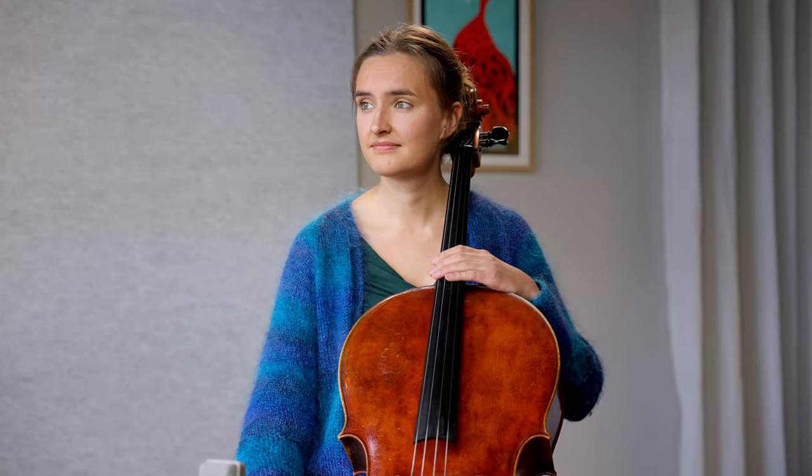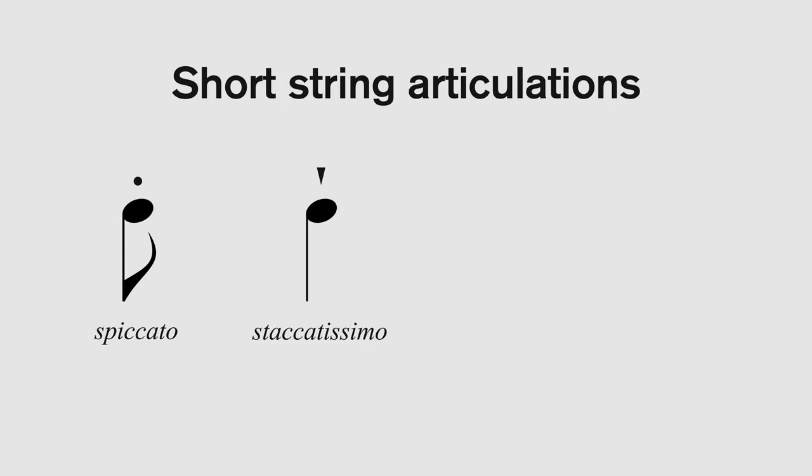It's funny because, as composers who use samples, we stick articulations into small boxes — spiccato, staccatissimo, and so on. When we put articulations into boxes, we mostly do it based on length. So we assume spiccato is the shortest, then staccatissimo or staccato short, then staccato, then marcato. But presumably you never see this kind of stuff written on a page. You just see notes with dots. Exactly — never.